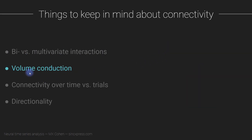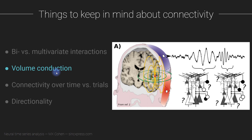Now we get to another source of concern and a potential confound for connectivity analyses in electrophysiology data: volume conduction. Volume conduction refers to the fact that electrical potentials can travel through — they can conduct through — biological tissues due to the conductivity of those tissues, in particular the water content in various tissue types. The electrical and magnetic waves conduct through volumes, and that's what volume conduction refers to.